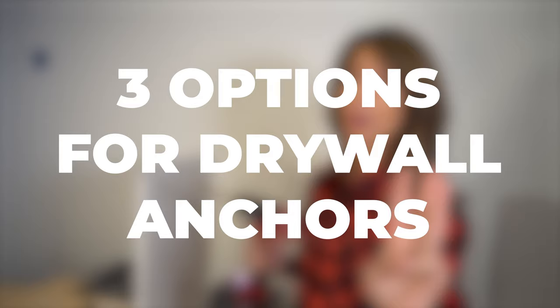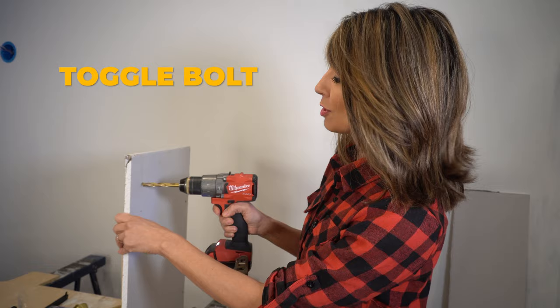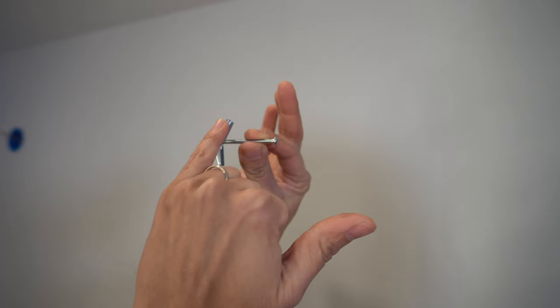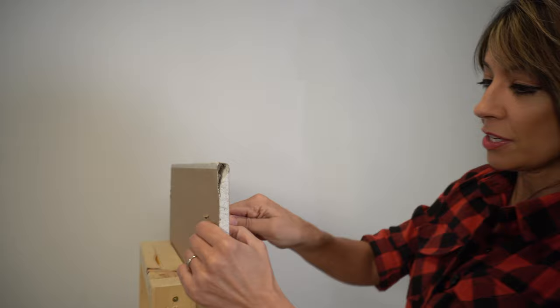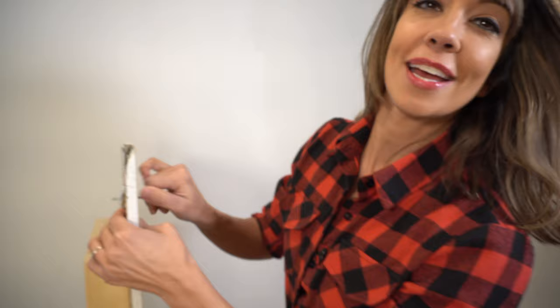What you should be using instead are these. There are really three good options for your anchors. The first anchor we're going to test out is the standard toggle bolt. You just want to drill through your drywall to make a pilot hole. You're going to pinch the wings together and feed it through the drywall. Push it through and on the other side the wings are going to grab tight and you're going to screw in your bolt or fastener here.